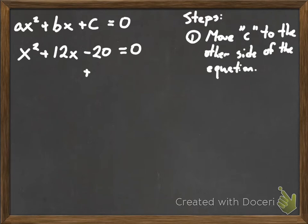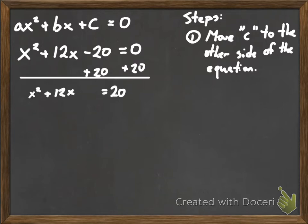Your first step is you want to move the c term to the other side of the equation. So I'm just going to add 20 to both sides, and so that's going to leave me with this form. This is the form you want when you do completing the square, because you want these x terms on one side of the equation, because that's what we're going to complete the square on. And then you want all of the constants over on here.